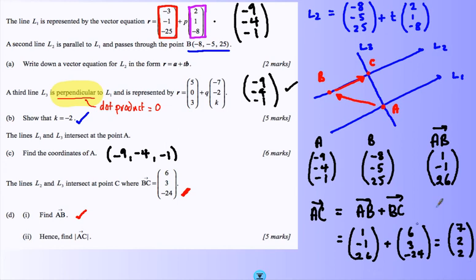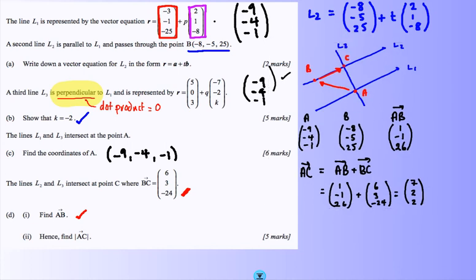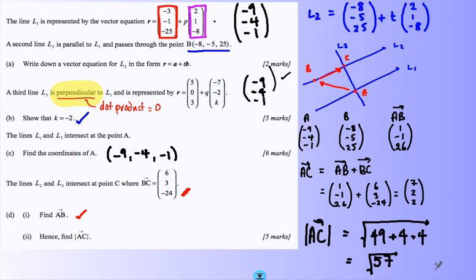And the modulus. Well, I thought I was going to just manage to do this without running out of room, but I haven't quite managed that. Shrink that down. And modulus is a little bit of Pythagoras going on. Square, square, square, add it all, and square root. Looks like the square root of 57 is the distance, and I can put that in my calculator and round if I want, but I'm going to leave it at square root of 57. That is the distance from A to C, and I think, finally, that's my question done.